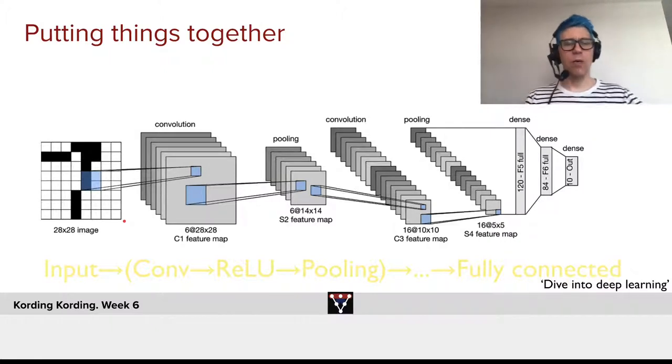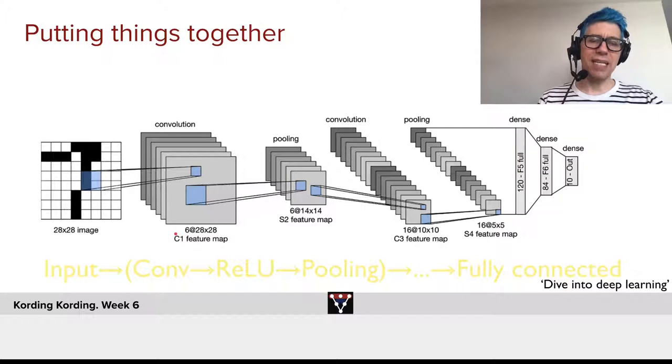Then, we will have a convolution that will basically give us, provided that we do some amount of padding, that convolution will give us six features here, also 28 by 28.